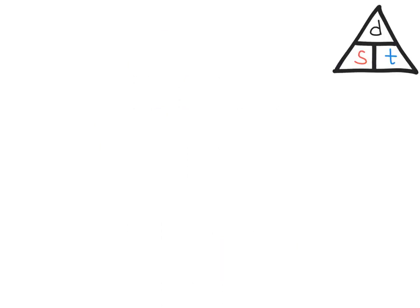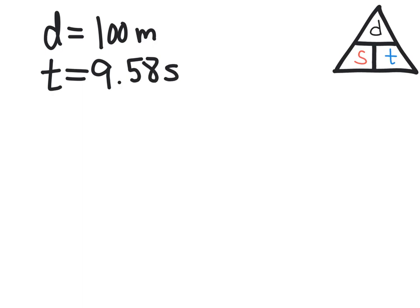The first thing to do is write down what we know, which is distance equals 100 meters, time equals 9.58 seconds, and speed is the variable that we're looking for in this example.